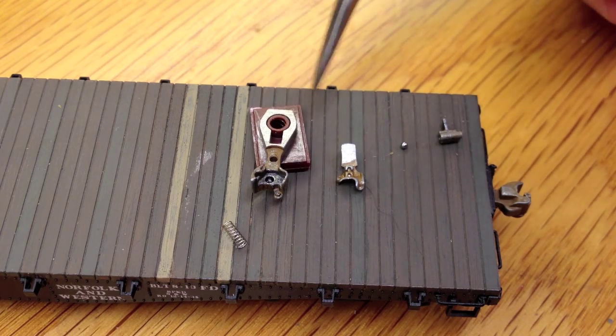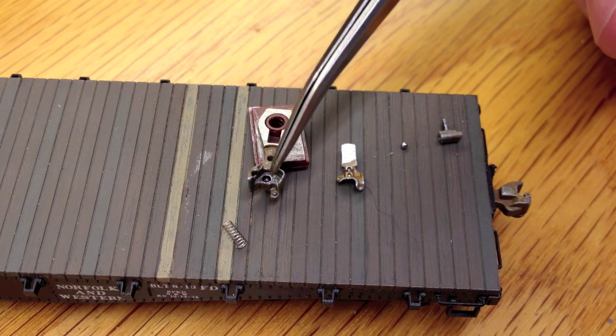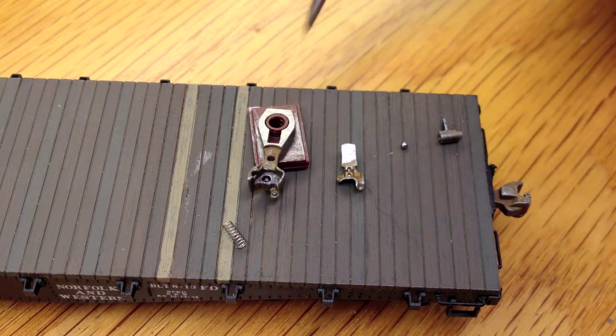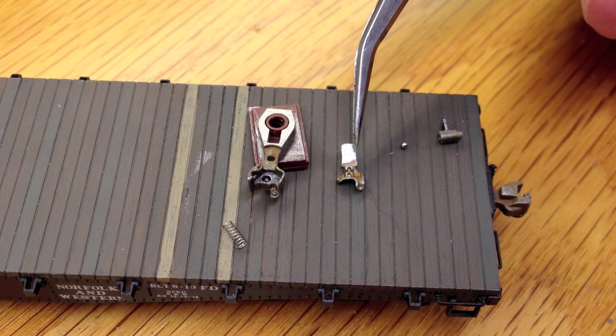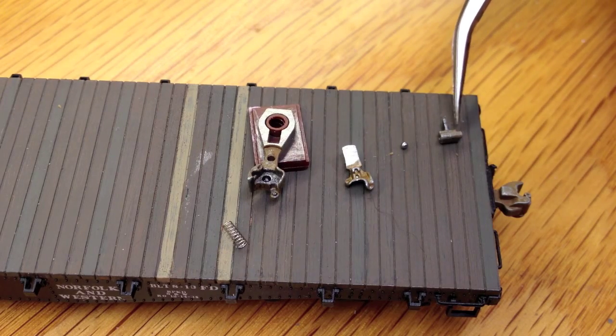But anyway, it's made up of these five component parts. You've got the shank and the top half of the coupler. We're actually looking at the bottom of this piece right here. The bottom side cover, the locking ball, and the knuckle.